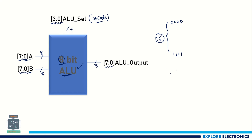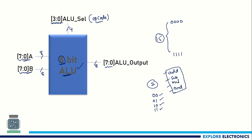If you want to perform only 4 operations — like addition, subtraction, multiplication, and a logical AND — then you can take the opcode with 2 bits. It will take values 00, 01, 10, 11, and for each operation a corresponding opcode is written. This is how we can choose the opcode size in an ALU.